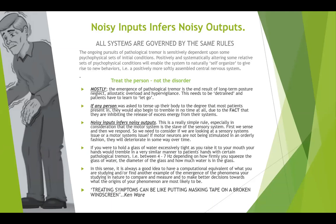Treat the person, not the disorder. Mostly, the emergence of pathological tremors is the end result of long-term posture neglect, allostatic overload, and hypervigilance. This needs to be detrained and patients have to learn to let go. If a person were asked to tense up their body to the degree that most patients present in, they would also begin to tremble in no time at all, due to the fact that they are inhibiting the release of excess energy from their systems. Noisy inputs infer noisy outputs — this is a really simple rule, especially in consideration that the motor system is the slave to the sensory system: first we sense, then we respond. We need to consider if we are looking at a sensory systems issue or a motor systems issue. If motor neurons are not being stimulated in an orderly fashion, they will deteriorate over time. If you were to hold a glass of water excessively tight as you raise it to your mouth, your hand will tremble in a very similar manner to patients with certain pathological tremors — at about four to seven hertz, depending on how firmly you squeeze the glass.